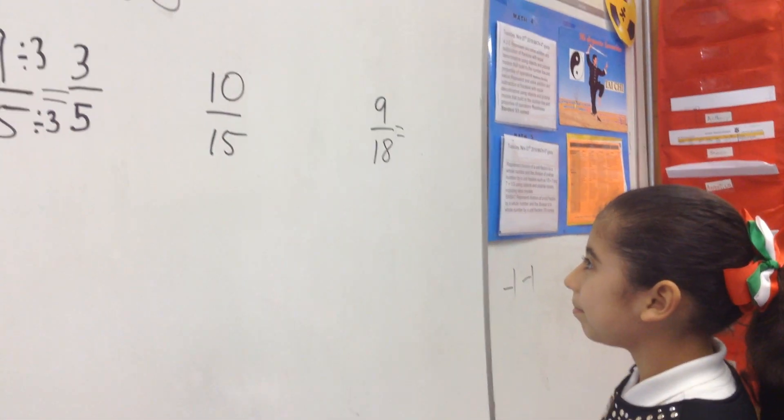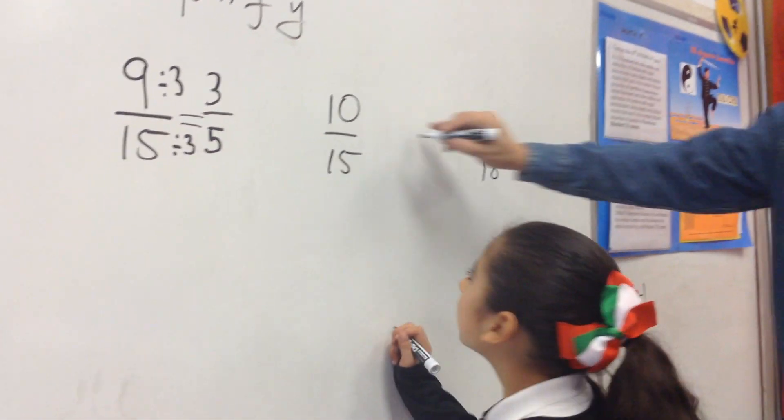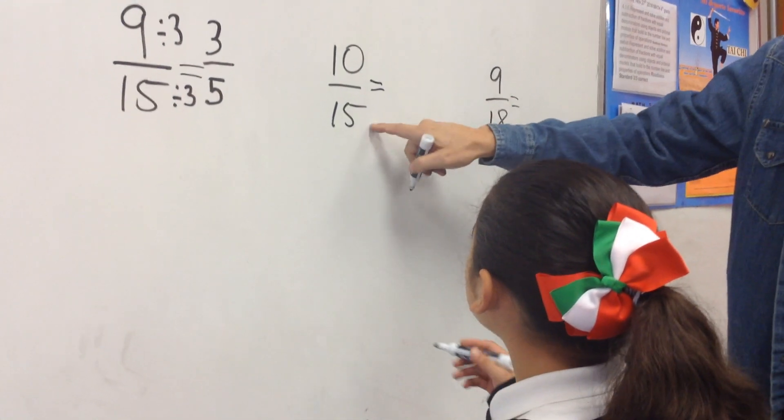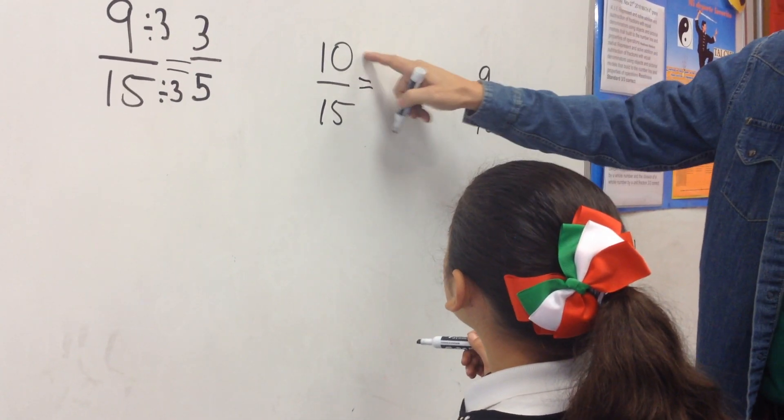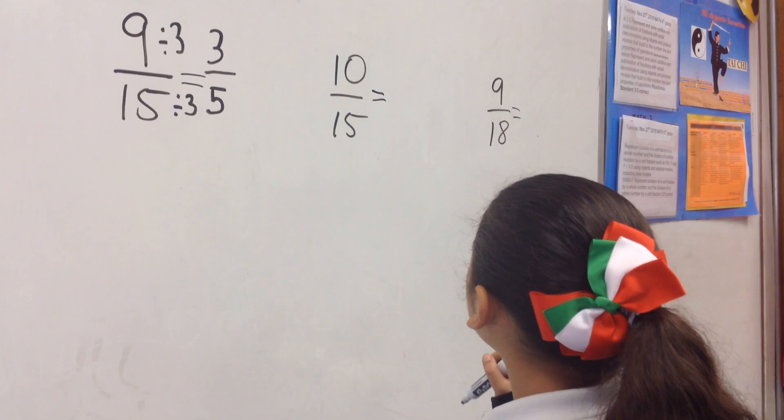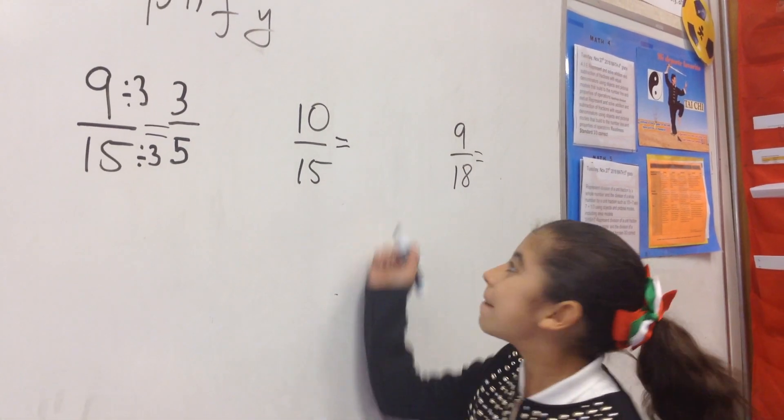You can divide by what? By 3? This is divided by 3, divisible by 3, but this is not. You have to try another number. 10 divided by 2. Then 15. 5, correct.